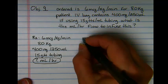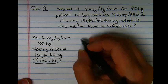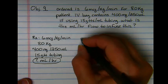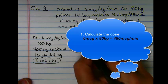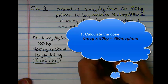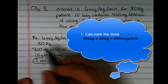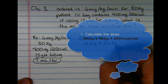So my first step, whenever I have an order that looks different than my supply and the way it needs to be given, will be to start with doing a step I call calculating the dose. To calculate the dose, I'm going to take the 6 micrograms and multiply this by the kilogram weight. So once I do that,